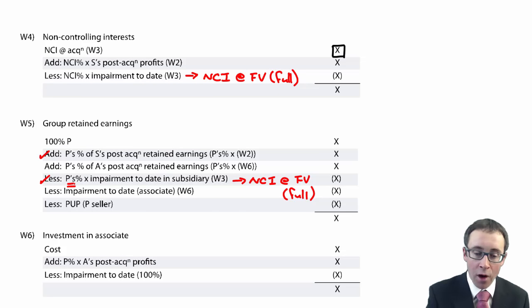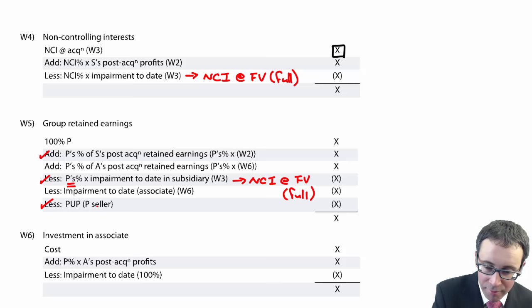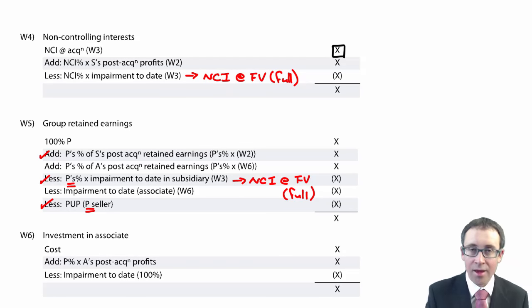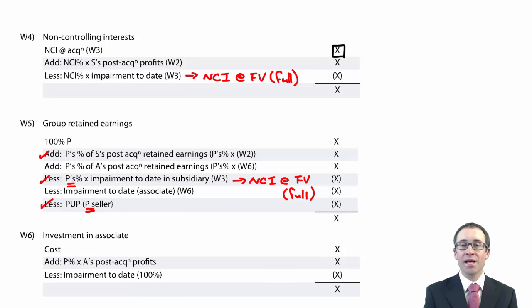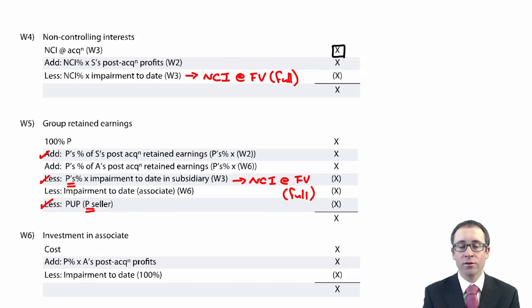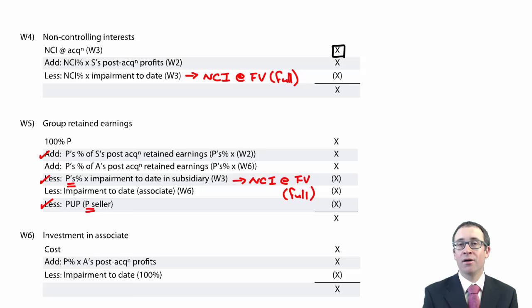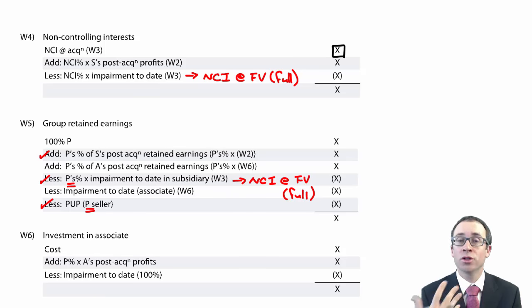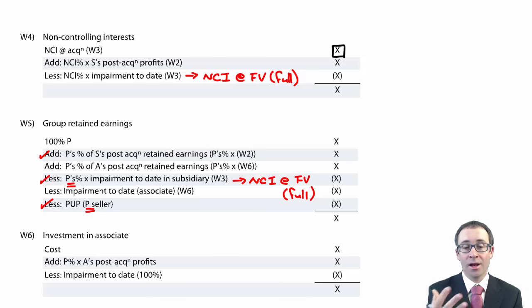If you've got a PUP and P is the seller, you adjust P's retained earnings and don't forget to adjust the group inventory as well. The other two items in working five relate to your associates.